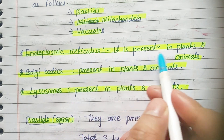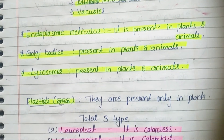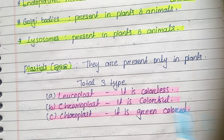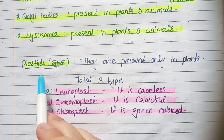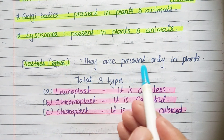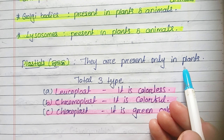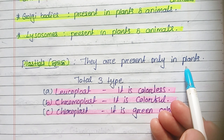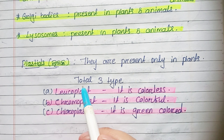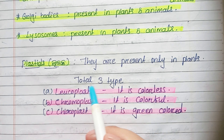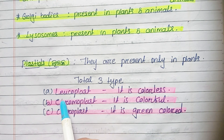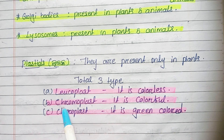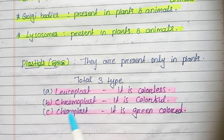This is about plant cells and animal cells. First of all, we have plastids. Plastids are present only in plant cells. There are three types: leucoplast, chromoplast, and chloroplast.